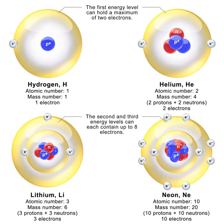High-energy neutrons have much more energy than fission energy neutrons and are generated as secondary particles by particle accelerators or in the atmosphere from cosmic rays. These high-energy neutrons are extremely efficient at ionization and far more likely to cause cell death than X-rays or protons.